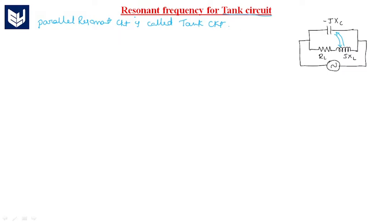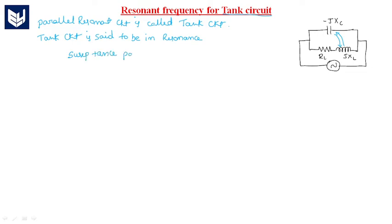So when the resonant frequency will occur in this circuit, this tank circuit is said to be in resonance. To say this circuit is under resonance condition, it has to satisfy the following condition: the susceptance part of admittance is 0. Then we can say that the circuit is under resonance condition.